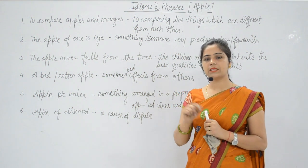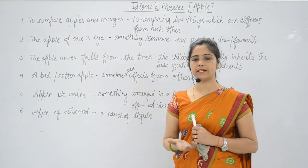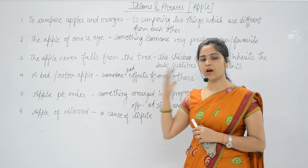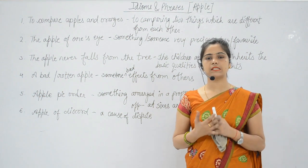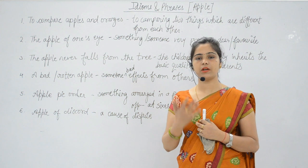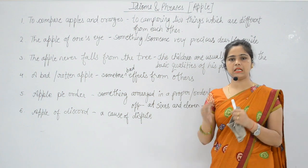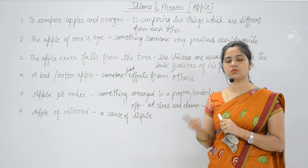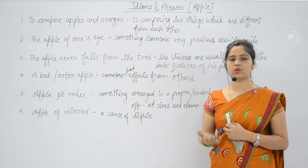First, 'compare apples and oranges' — to compare two things that are very different. The example given was bicycle and motorcycle. Next, 'the apple of one's eye' — someone who is a favorite or precious to us. Next, 'the apple never falls far from the tree' — children usually inherit the basic qualities of their parents.